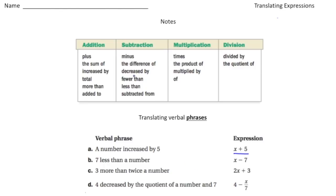So if you look up here basically there's a table that for every operation there are words associated with that operation. So for example with plus, you might see the sum of, increased by, total, more than, or added to. For the operation of subtraction you might see words like minus, the difference of, decreased by, fewer than, less than, or subtracted from.